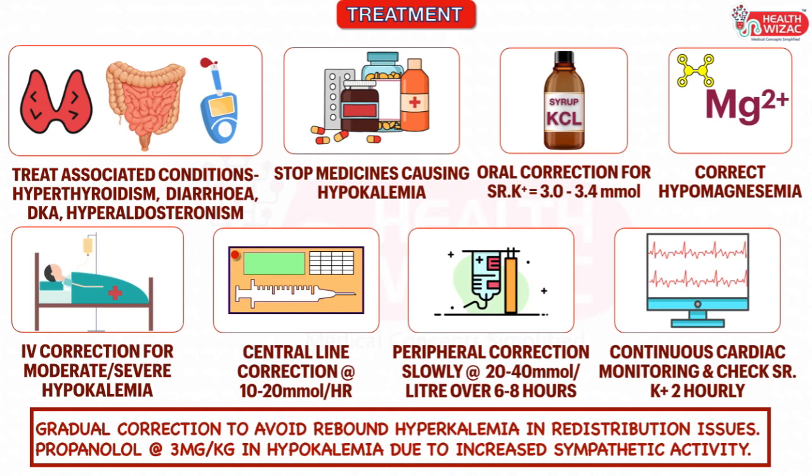While treating hypokalemia associated with increased sympathetic activity, high-dose propranolol of 3 mg per kg can also be used.